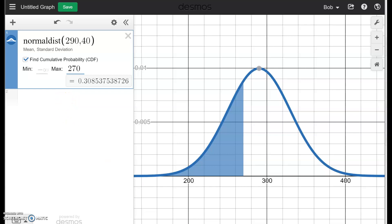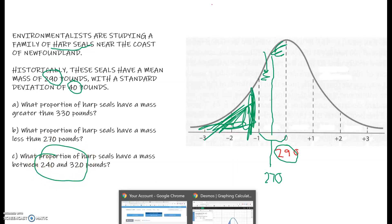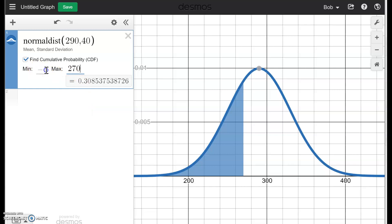What if I wanted to go between? Notice the last question here is what proportion of harp seals are between 240 and 320? Well, I can go back to my picture, and now I'll go between 240 and 320, and I see that I have 0.6677 is that proportion. So for these problems,